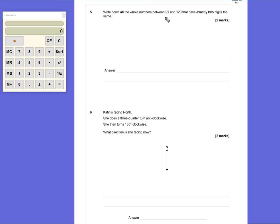Now, if it really doesn't stand out to you what the answer is, what you could do is write down every number between 91 and 120.